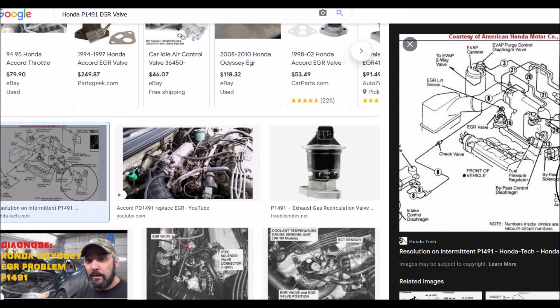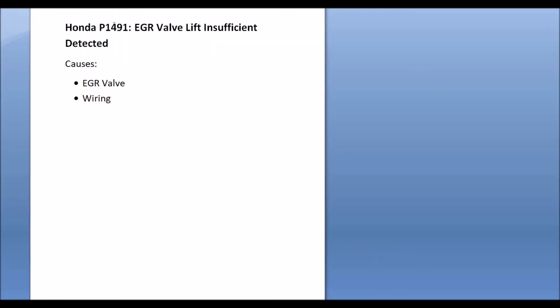Like I said, 90% of the time when you have this problem, when you have a Honda P1491, it's going to be the EGR valve or it's going to be in the wiring. So that's basically it, I just wanted to give a quick overview of a Honda P1491 code. If you have anything to add, please comment down below. If you have any questions, ask me and I'll try to answer them. If this video helps you, please click like, please click subscribe, and have a good day.